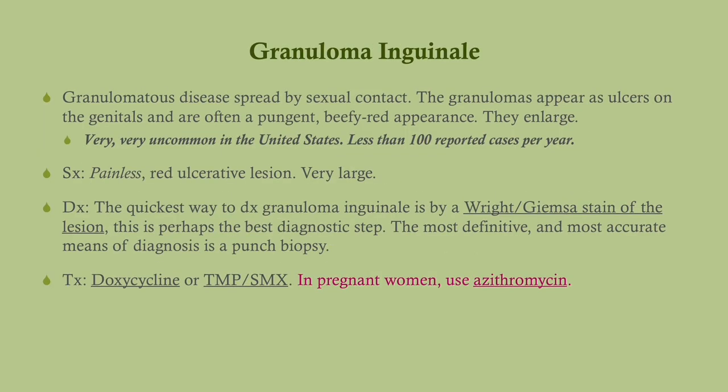Granuloma inguinale is also very uncommon in the United States — fewer than 100 reported cases per year. The common description is a beefy red lesion that gets bigger. Despite its appearance, it's not really that painful, but lesions are very large. The quickest way to diagnose is the Giemsa stain, probably the best diagnostic step, but the most definitive step is a biopsy. Treatment is doxycycline or cotrimoxazole — trimethoprim-sulfamethoxazole.